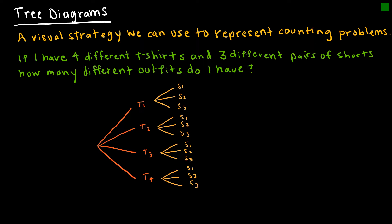The strength of a tree diagram occurs at the final outcome. The final outcomes here would be t-shirt one and shorts one, t-shirt one and shorts two, t-shirt one and shorts three, and so on for each t-shirt. That last column is where we can see all of our outcomes.